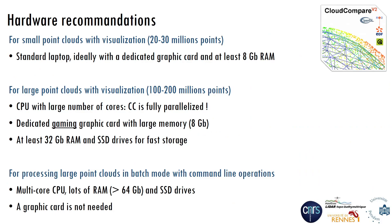A few hardware recommendations. If you intend to process small point clouds with direct visualizations, such as 20–30 million points, a standard laptop — ideally with a dedicated graphics card and at least 8GB of RAM — will be enough. For large point clouds, typically 100–200 million points, you need a powerful CPU with a large number of cores, because CC is fully parallelized. You need a dedicated gaming graphics card with 8–12GB of memory, at least 32GB of RAM, and an SSD drive for fast storage.